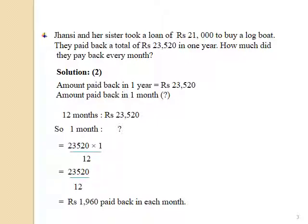How much money did they pay back every month? Students, in this sum, we have to find out the money paid back by Jasi and her sister in each month. Money paid back in one year is Rs. 23,520, but we have to find out for one month.